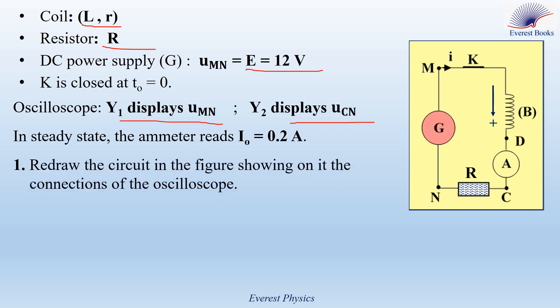Number one: redraw the circuit in the figure showing on it the connections of the oscilloscope. Since the oscilloscope displays UMN and UCN, point N must be connected to the ground of the oscilloscope, the phase of channel 1 must be connected to point M, and point C must be connected to the phase of channel 2. Look at the figure.